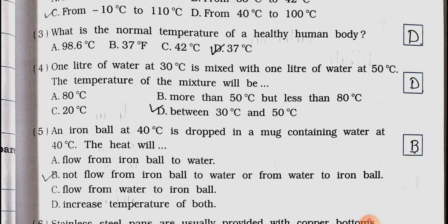Number 4: One liter of water at 30 degree Celsius is mixed with one liter of water at 50 degree Celsius. The temperature of the mixture will be: A. 80 degree Celsius, B. more than 50 degree Celsius but less than 80 degree Celsius, C. 20 degree Celsius, and D. between 30 degree Celsius and 50 degree Celsius. Answer is option D, between 30 degree Celsius and 50 degree Celsius, because the temperature of water having temperature 30 degree Celsius increases due to absorption of heat, while temperature of water having temperature 50 degree Celsius decreases because of loss of heat, until temperature of whole mixture becomes constant.